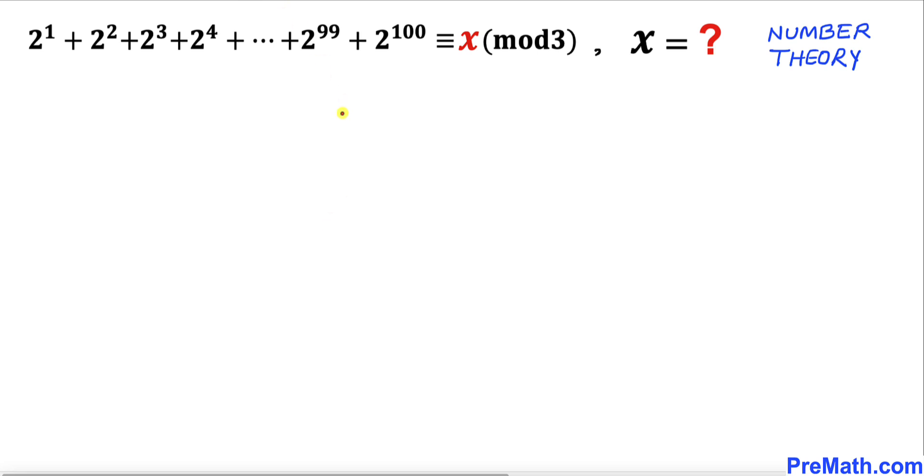Let's get started with the solution. Keep in mind that congruent x mod 3 simply means we are going to find the remainder x when this huge number string is divided by 3.